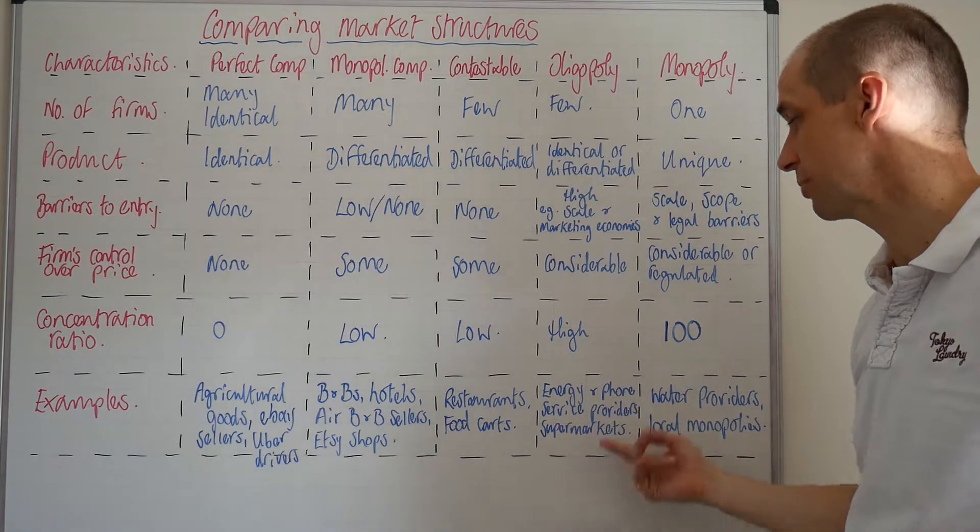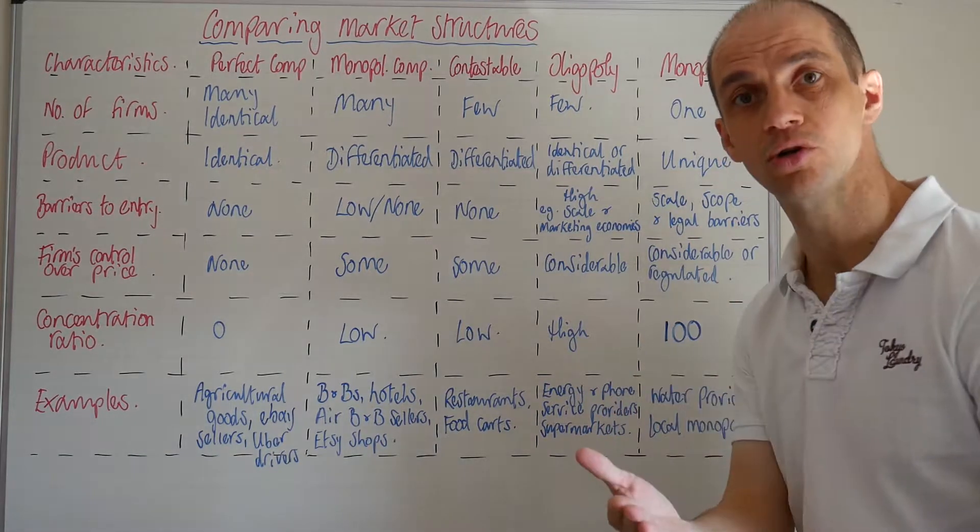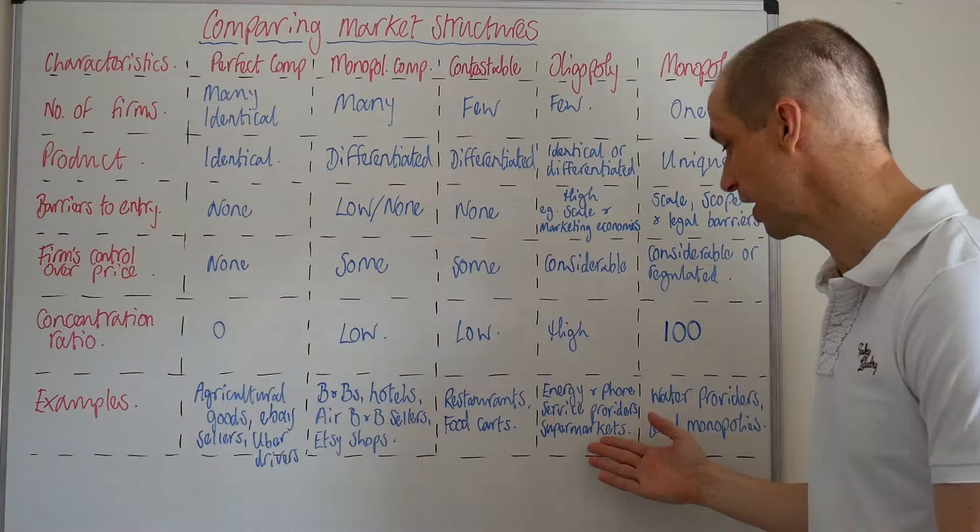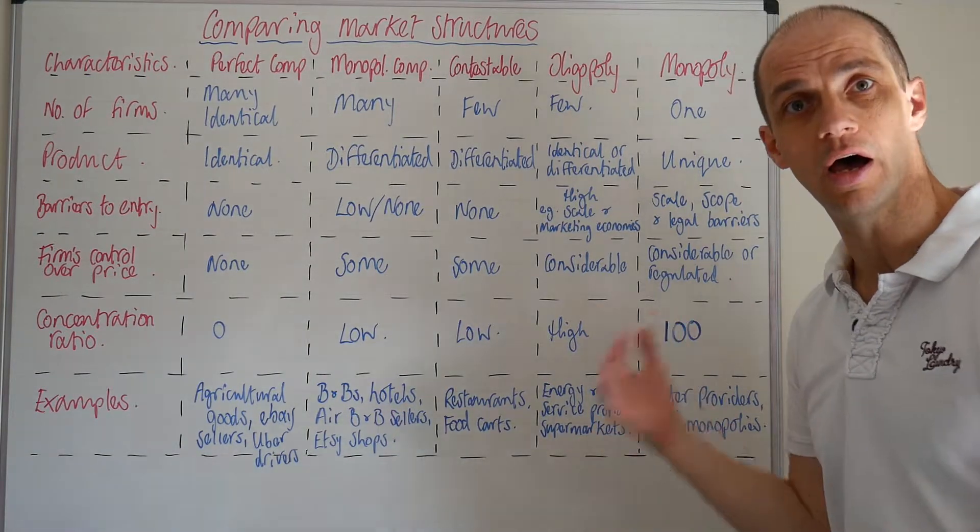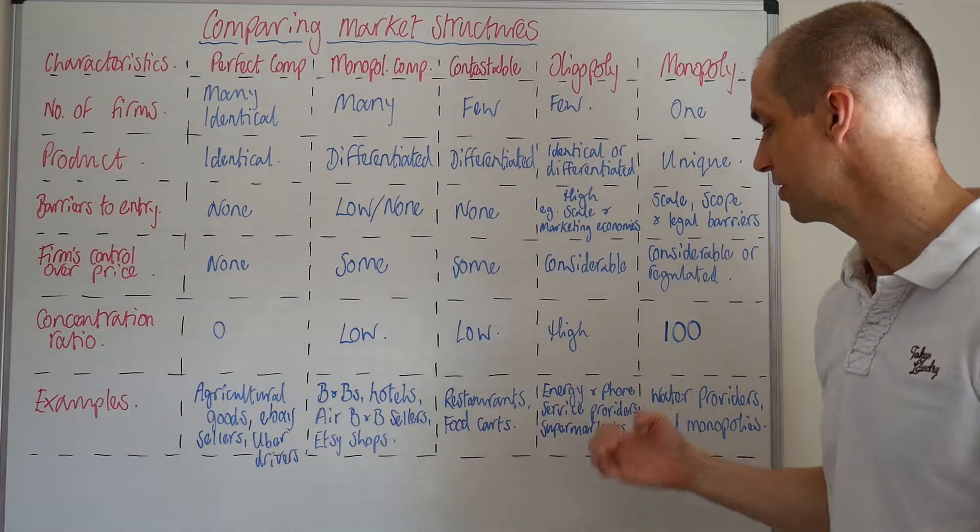Good examples include perhaps energy and phone service providers, supermarkets. Perhaps you could also use Uber as a good example there against another competitor firm like Lyft. So that gives you a really nice comparative tool.